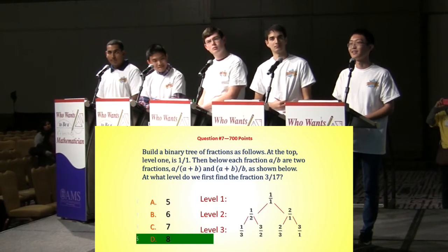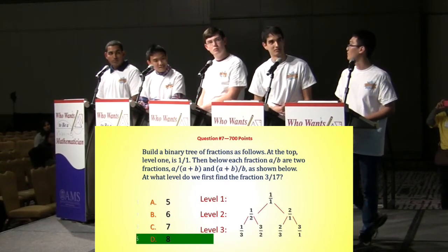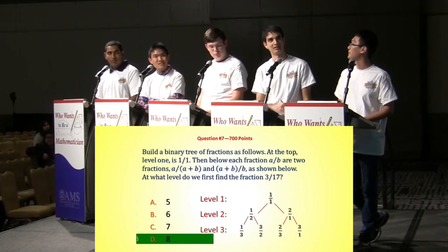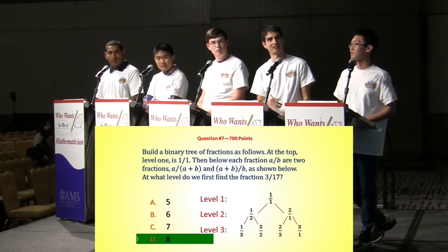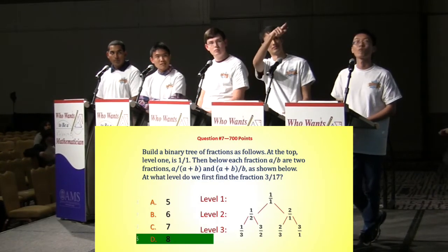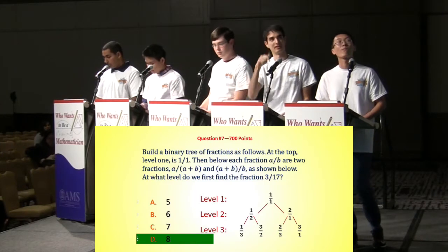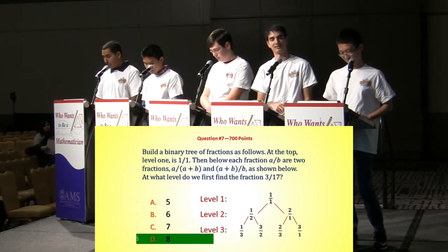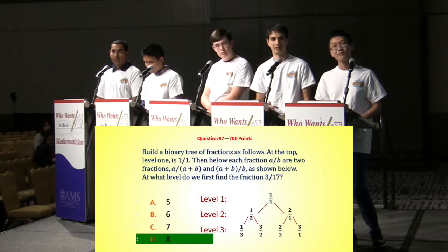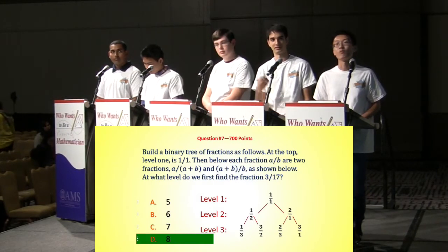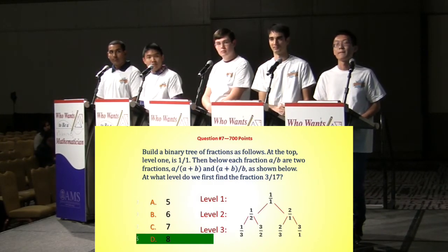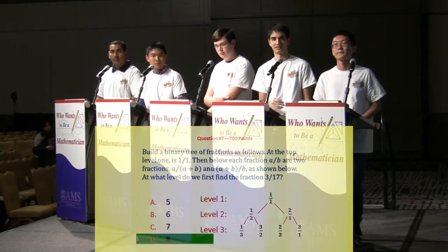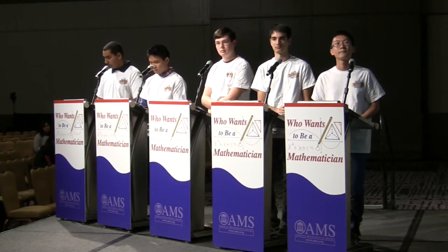Caleb, is that how you did it too? No, I just worked backwards from 3 over 17. Because the denominator is bigger, the one above it must come down through A over A plus B. So I just worked backwards until it got eventually up to 3 halves, which told me that. Right, so that gave you 3 fourteenths, then 3 elevenths, and you just kept working. Nice going.